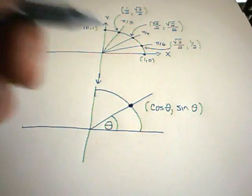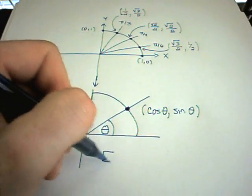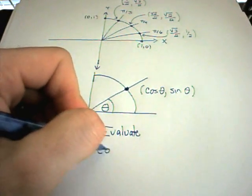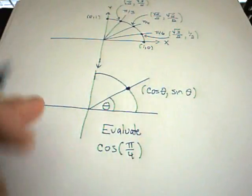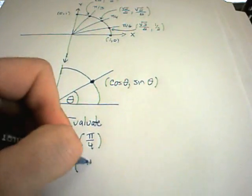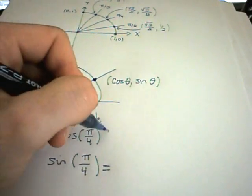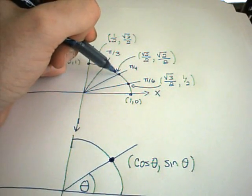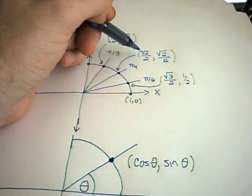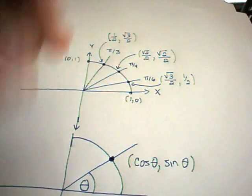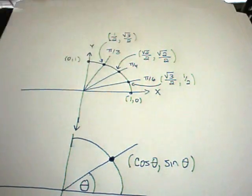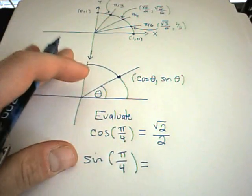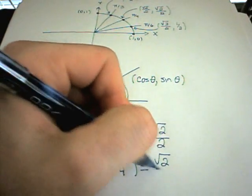Referring to our examples above, suppose we wanted to evaluate cosine of π over 4 and sine of π over 4. I find the angle π over 4 on my graph. The x-coordinate is square root of 2 over 2, and the y-coordinate is square root of 2 over 2. So cosine of π over 4 equals square root of 2 over 2, and likewise sine of π over 4 equals square root of 2 over 2.